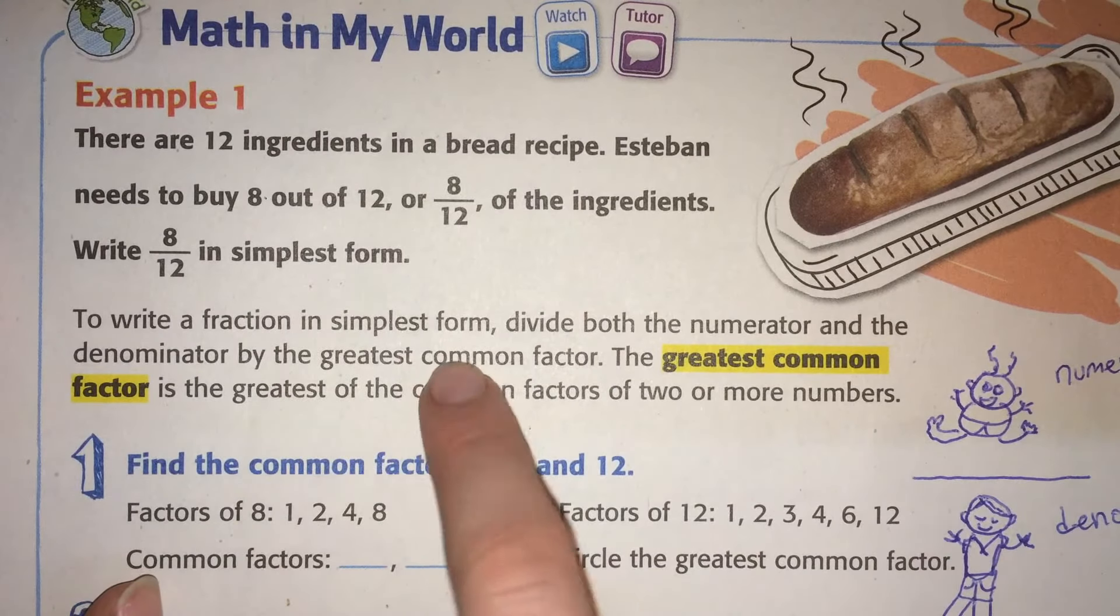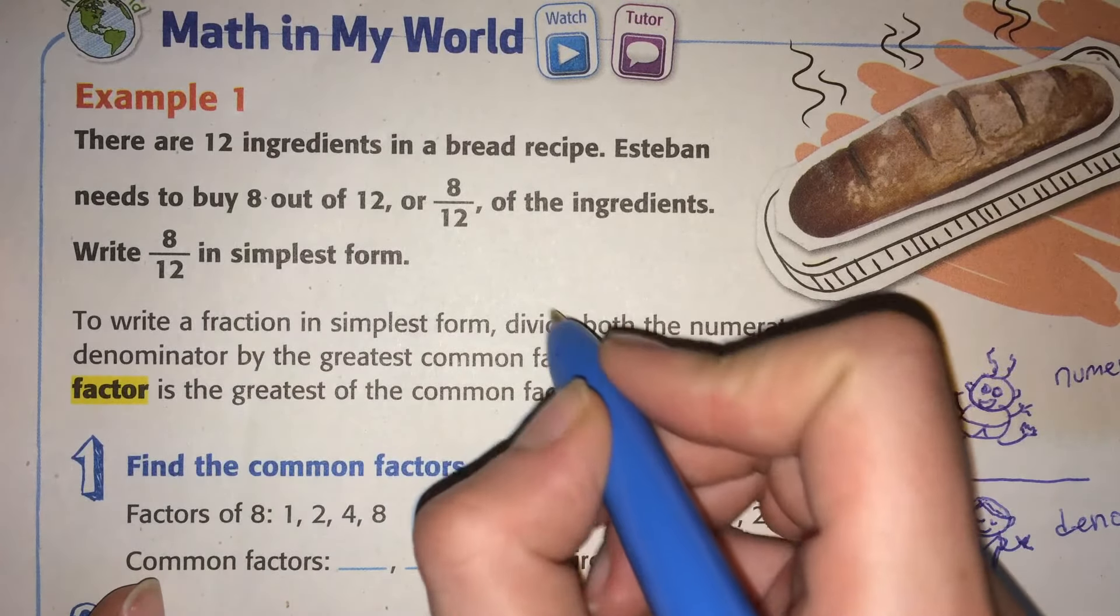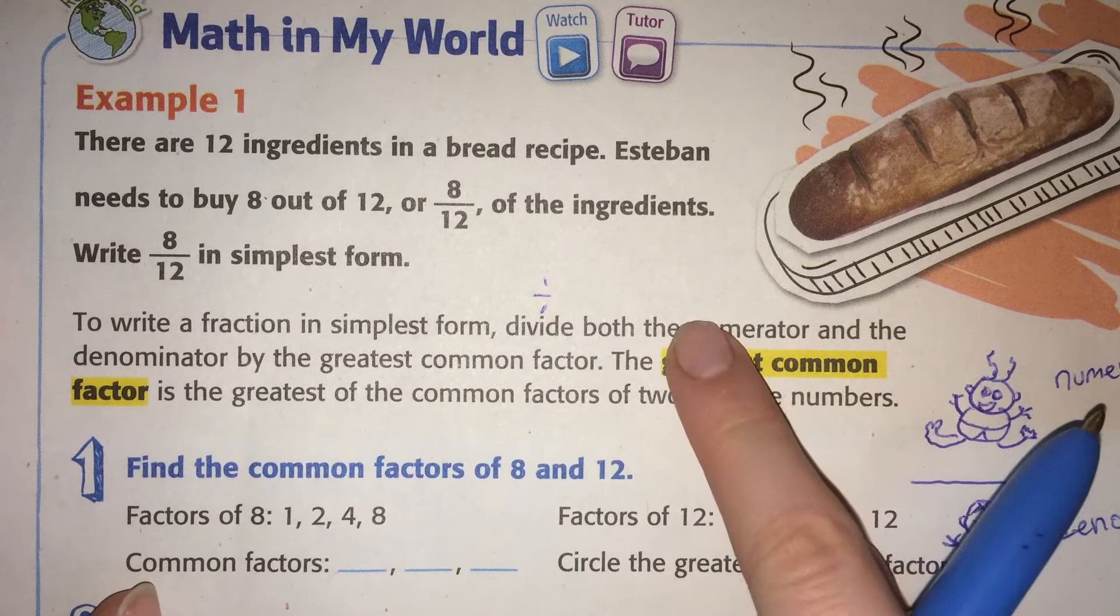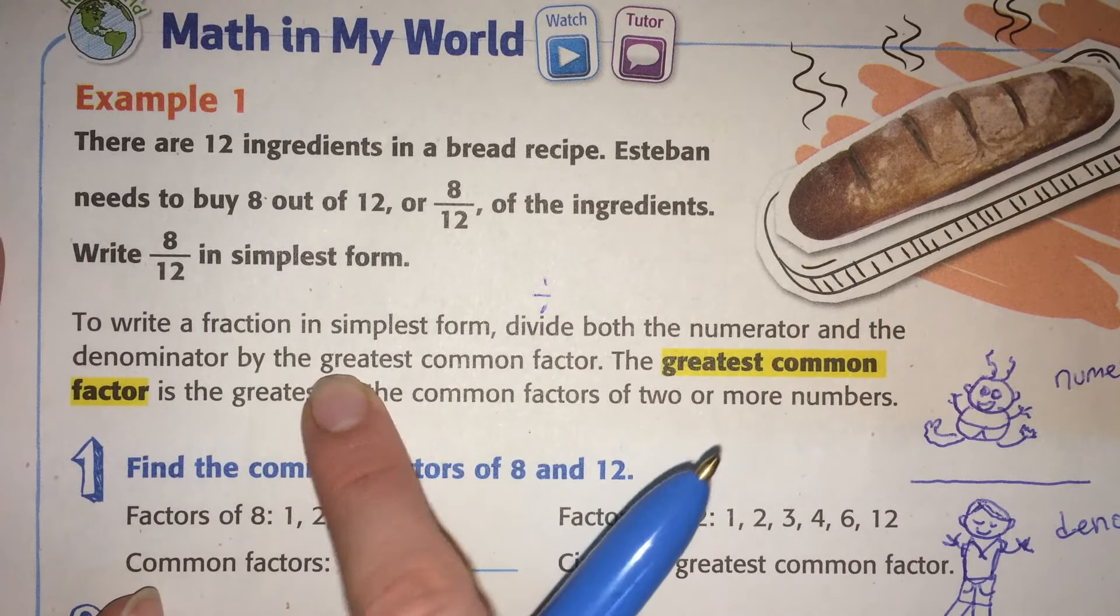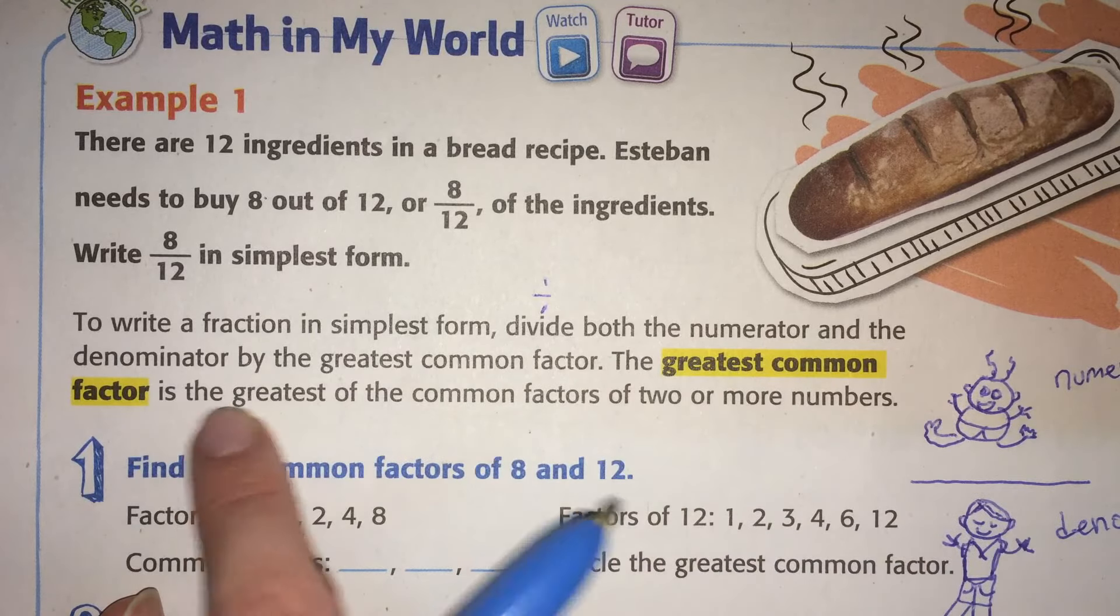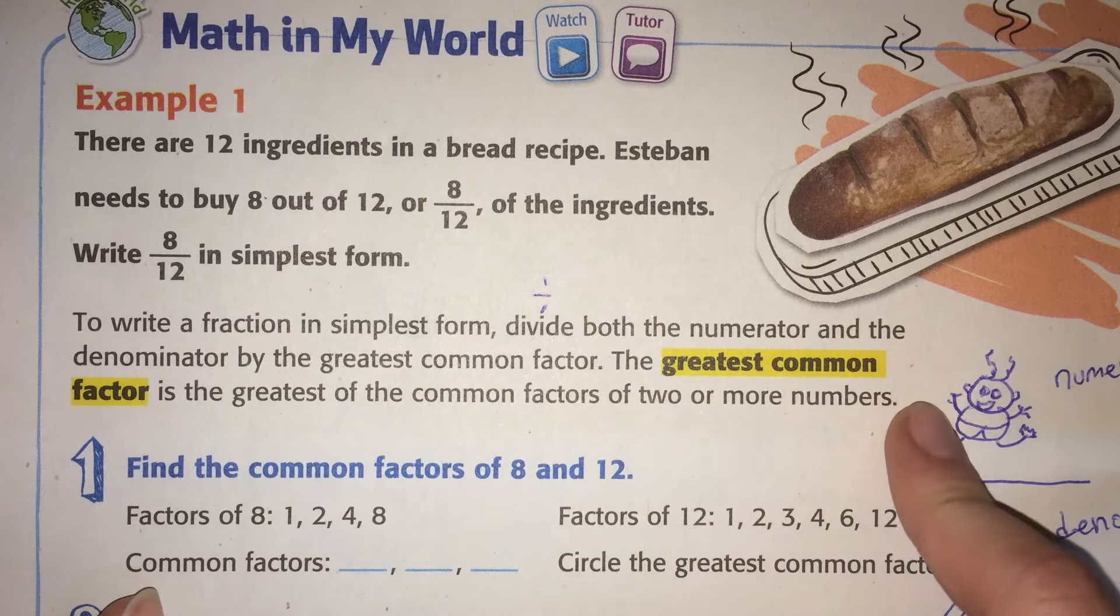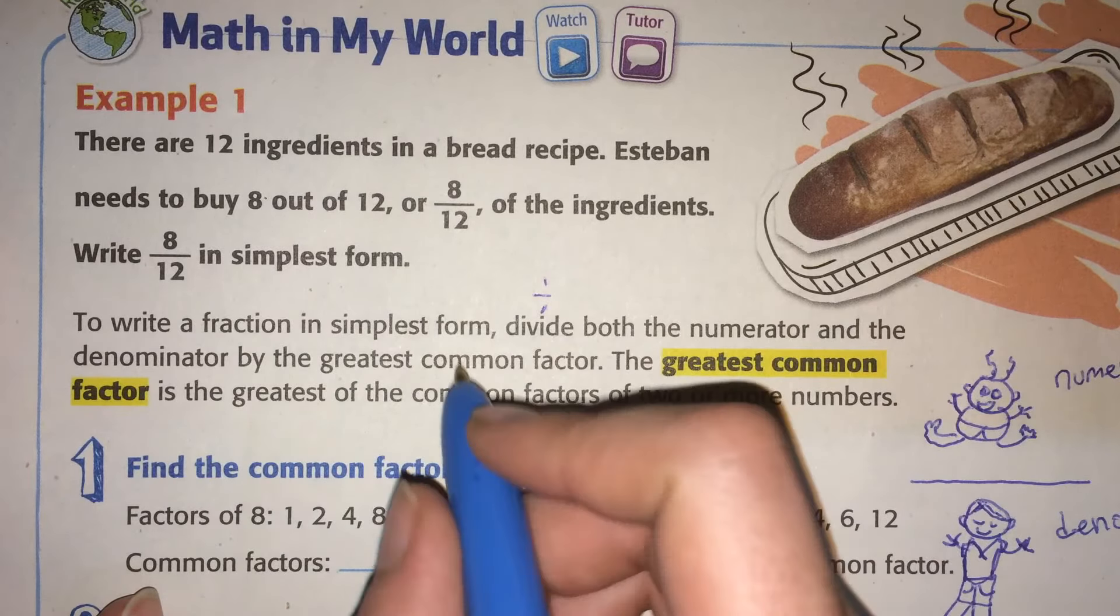To write a fraction in simplest form, divide both the numerator and the denominator by the greatest common factor. The greatest common factor is the greatest of the common factors of 2 or more numbers. The biggest one.